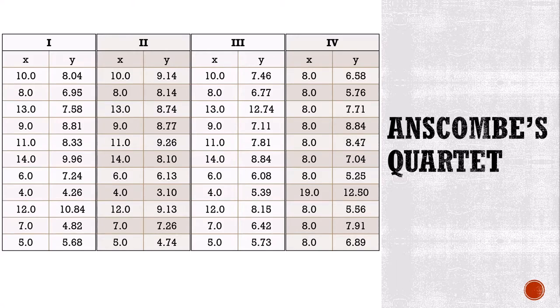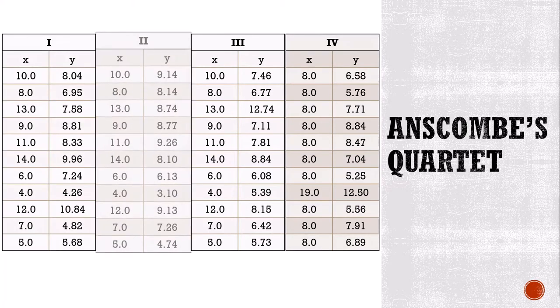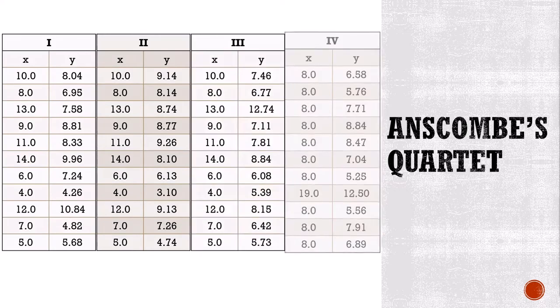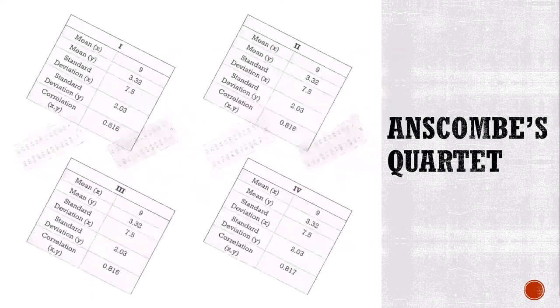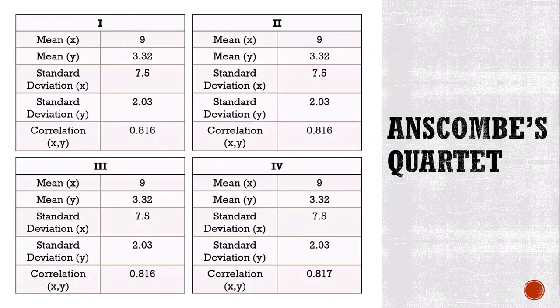The quartet consists of four data sets, each comprising 11 pairs of x-y coordinates. The summary statistics for these four data sets are identical out to two or three decimal places. All four have the same mean, standard deviation, correlation, and regression equation. The central tendency of all four data sets, in other words, is effectively identical.